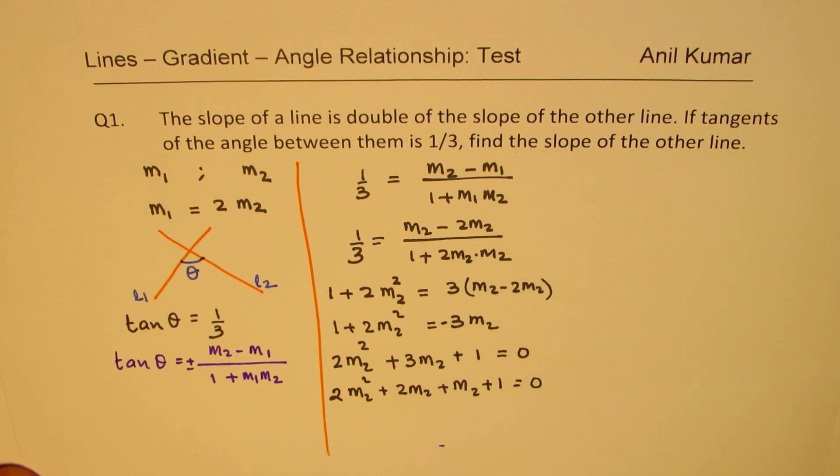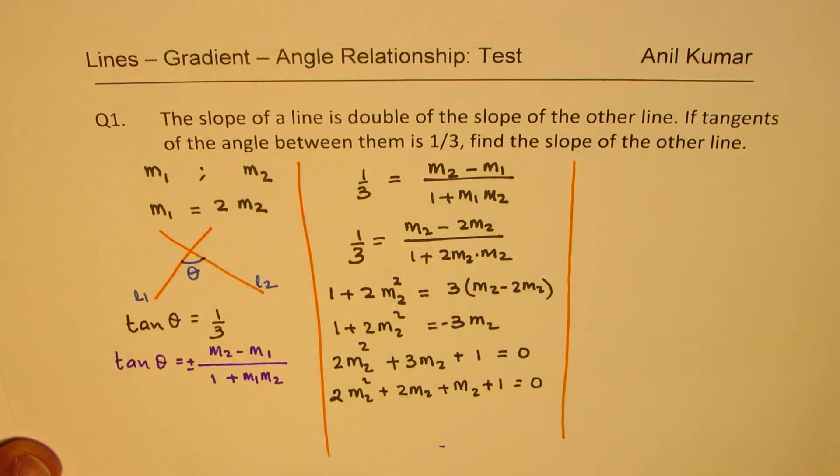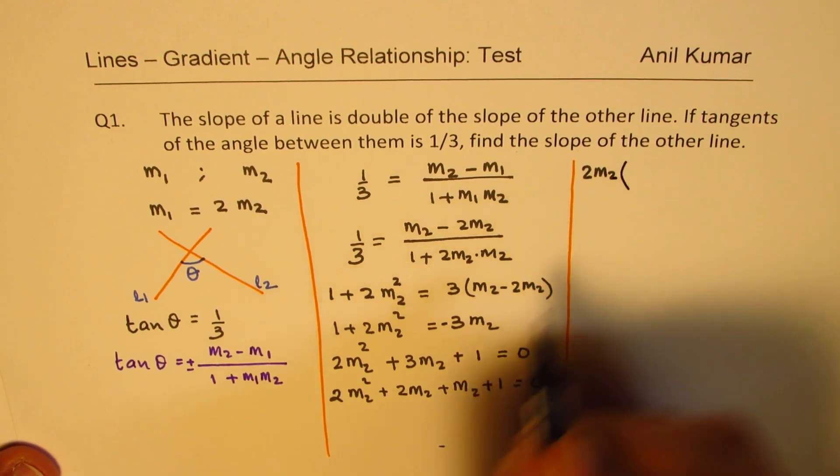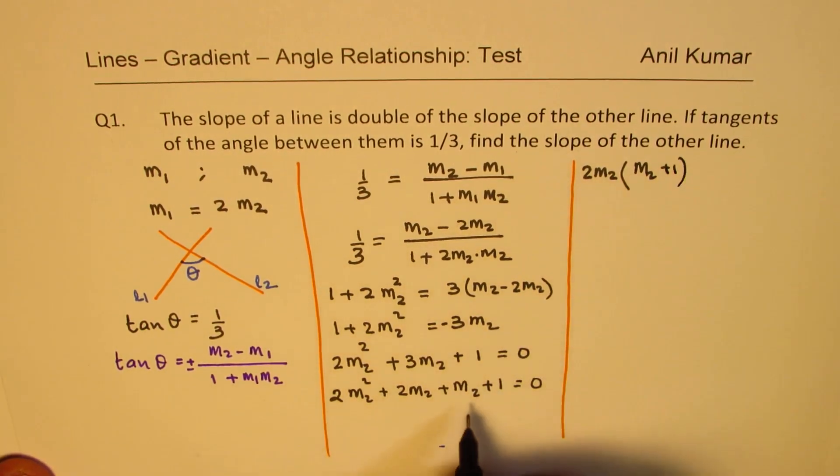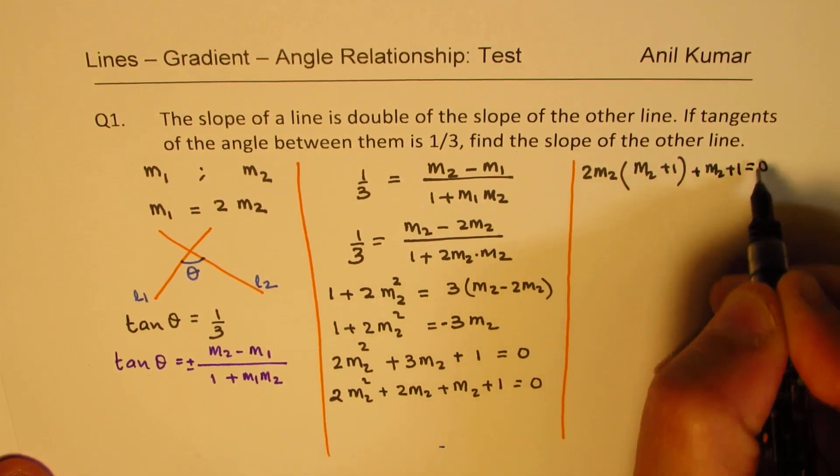So, we can now factor this and find the value of m2. So, I hope the steps are absolutely clear. Taking 2 m2 common, in the first two terms, we get m2 plus 1, and here we already have m2 plus 1. Equals to 0.